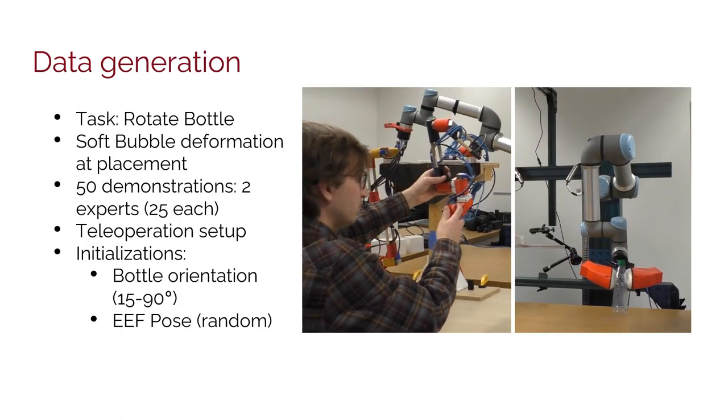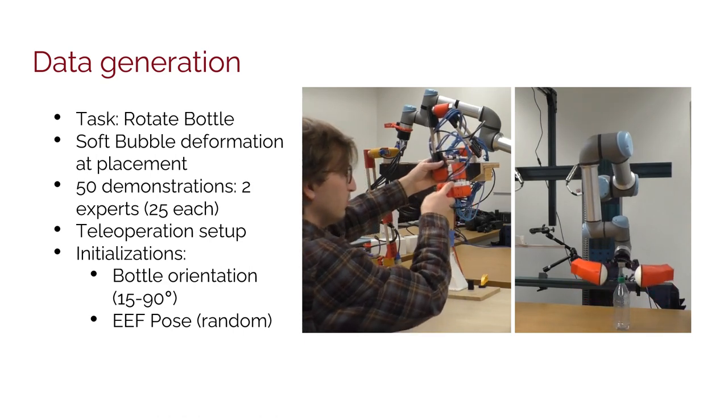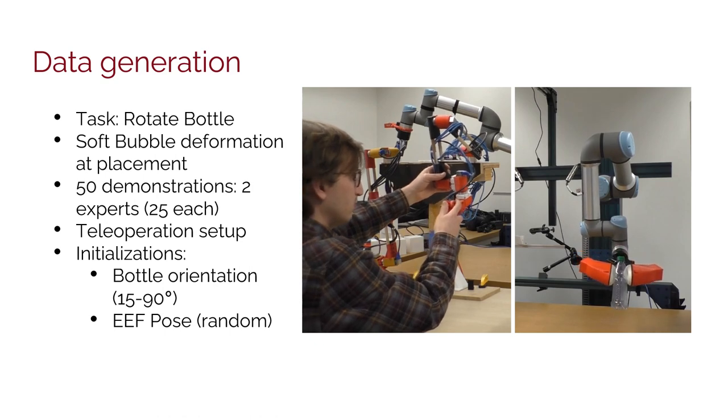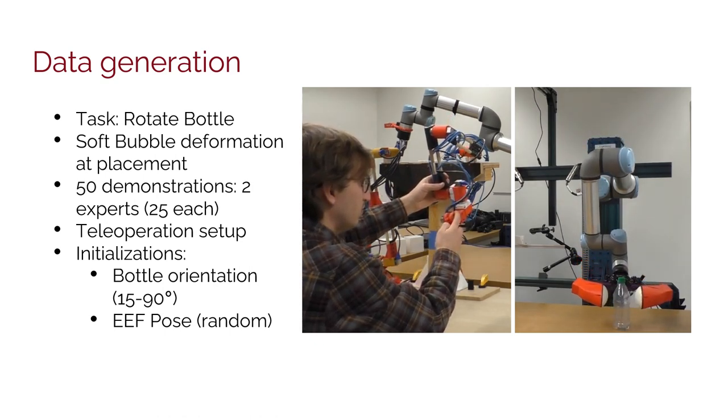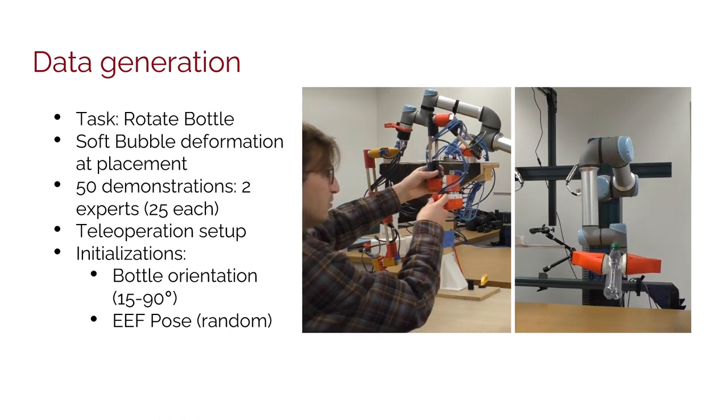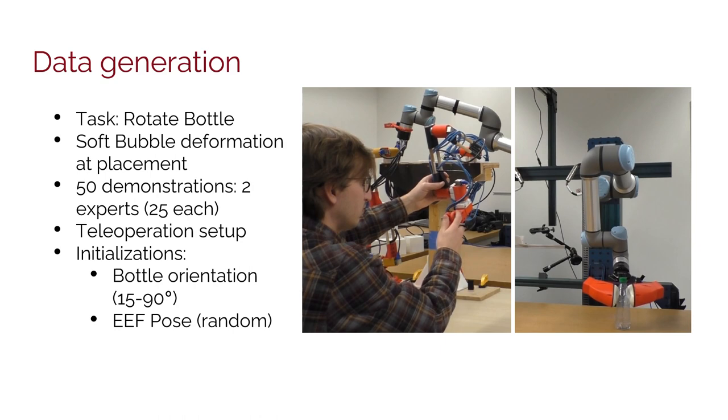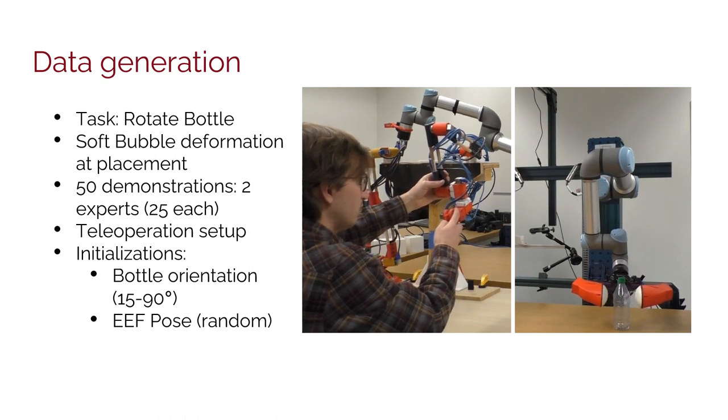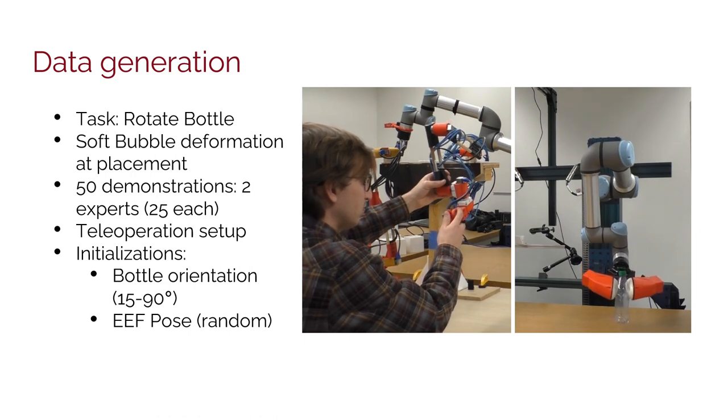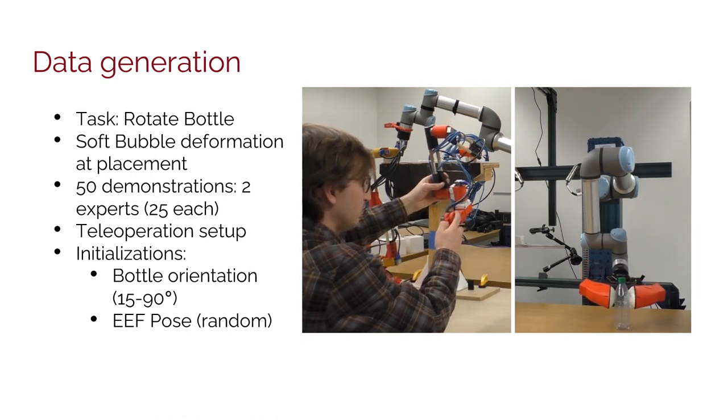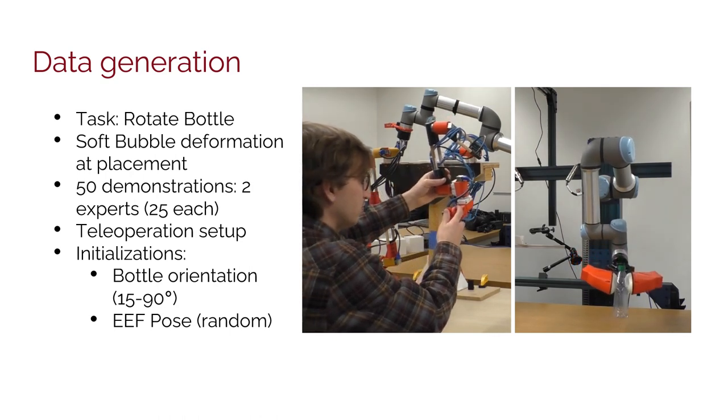The Rotate Bottle Task starts with a stable grip of a random rotation of the bottle in the Soft Bubble Grippers. The demonstrator's goal is to place the bottle onto the table, registering deformation in the soft bubbles at the time of placement to ensure contact-rich interaction. We recorded 50 demonstrations, 25 each, between two expert demonstrators on the custom teleoperation setup pictured. We initialized our bottle rotations from 15 to 90 degrees in the Soft Bubble Grippers and randomized the end-effector pose.